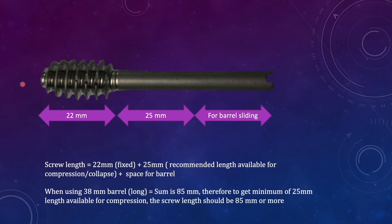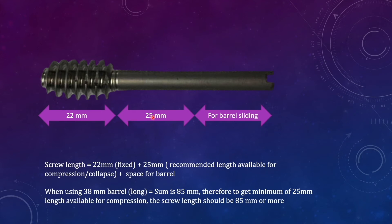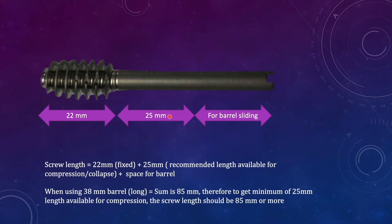First of all, you need to be aware about the dimensions of the lag screw used for DHS fixation. The threaded part is 22 millimeter in length, while 25 millimeter is the distance anticipated for collapse as well as intraoperative compression, and the remaining part is available for sliding inside the barrel. So the screw length equals 22mm plus 25mm plus the space for the barrel.